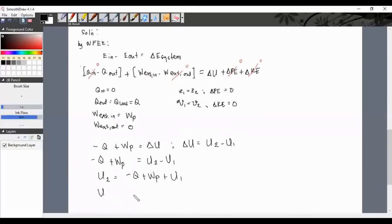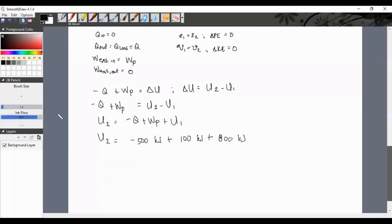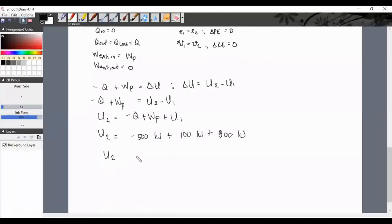Final internal energy equals -500 kJ + 100 kJ + 800 kJ. Finally, we have the final internal energy of 400 kilojoules. That's the answer. Thank you.